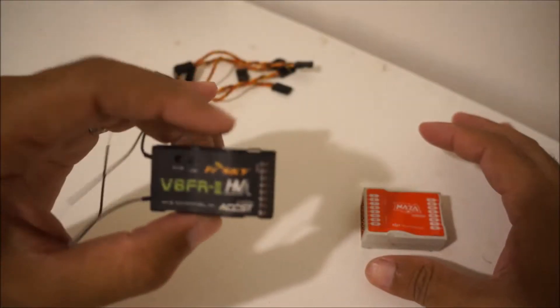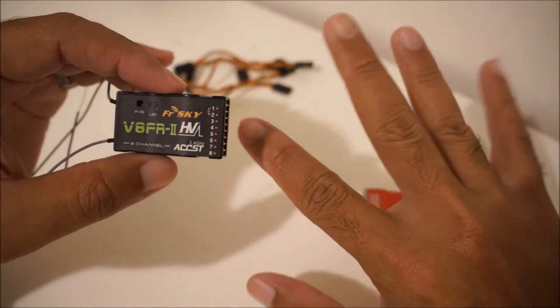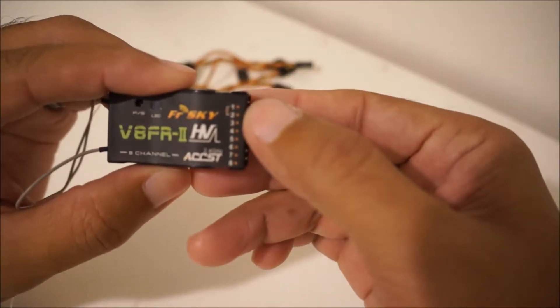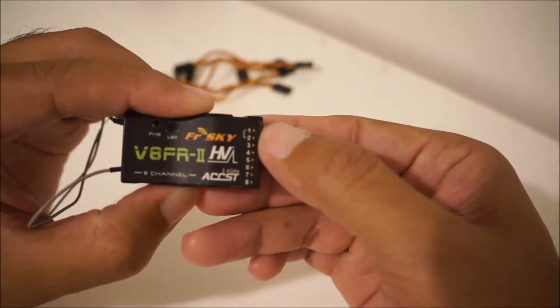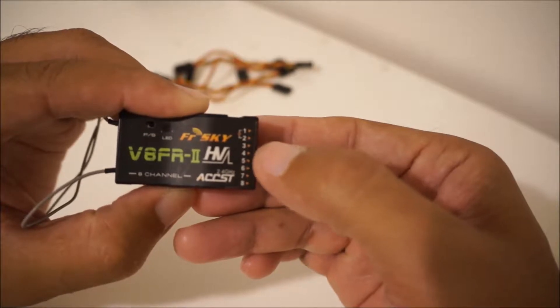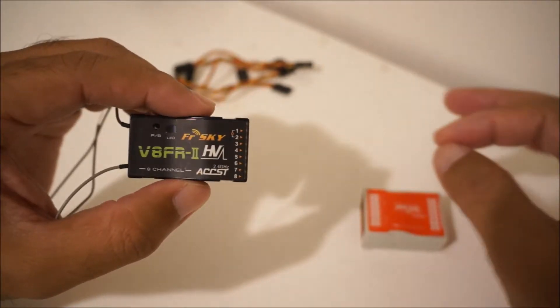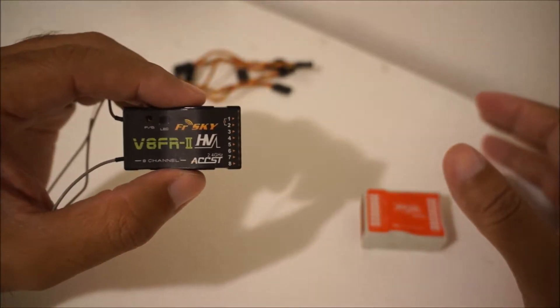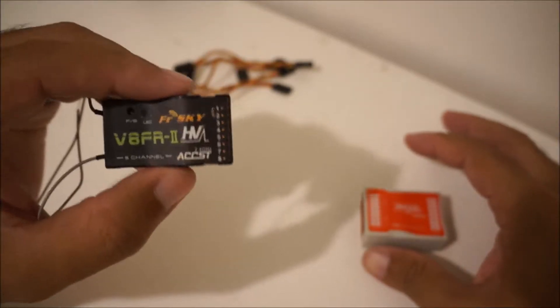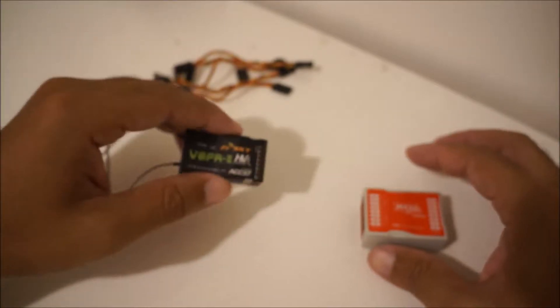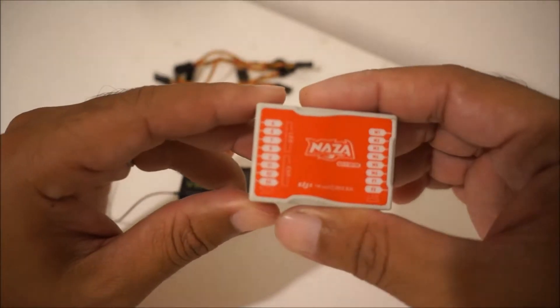First off, for your basic quadcopter you need five channels. You're going to need one, two, three, four, five at least. If you want to do some more additional stuff that your quadcopter can do, you're going to have to add some more channels on there, but the basic is five channels.